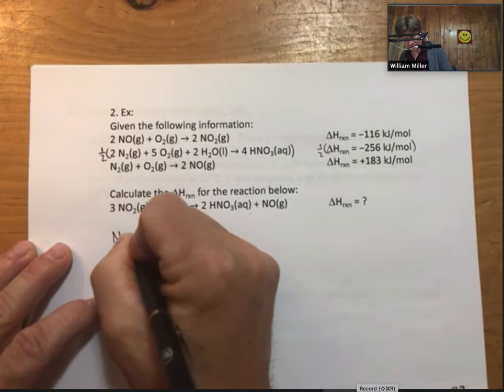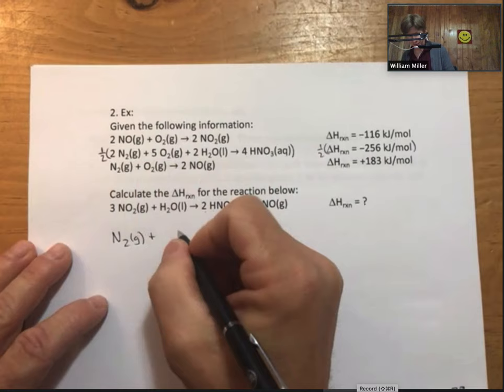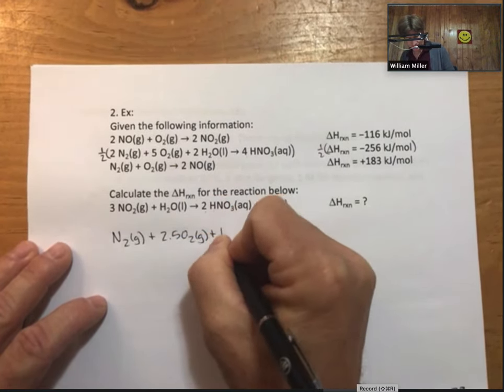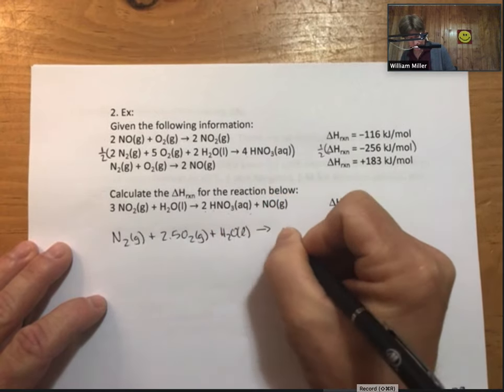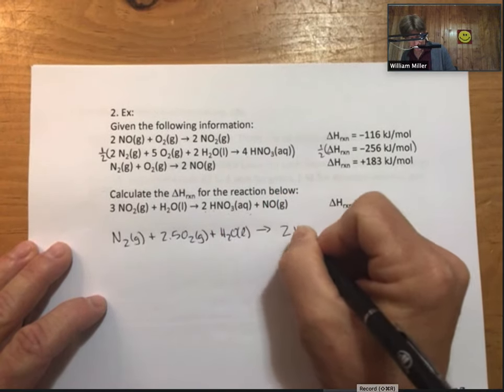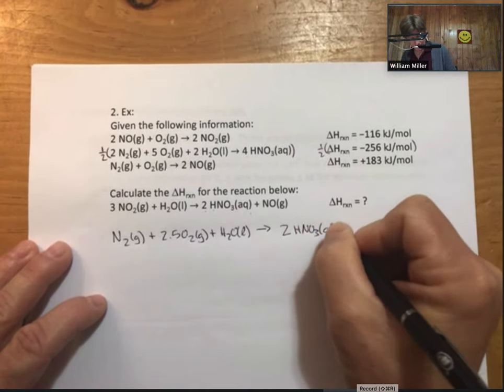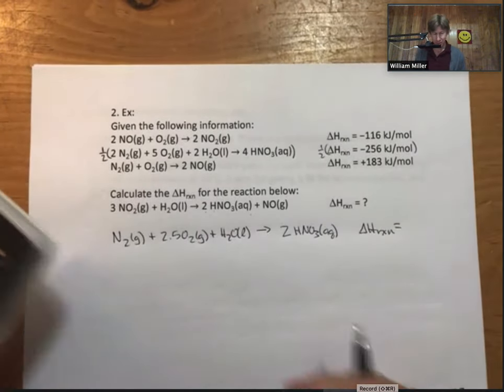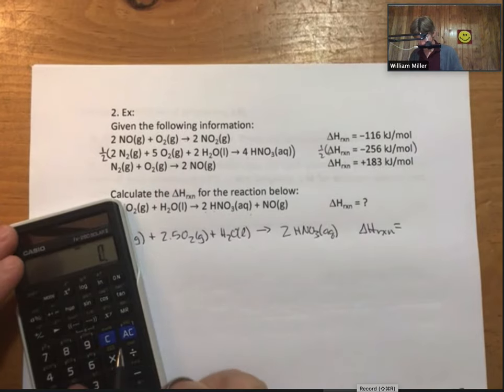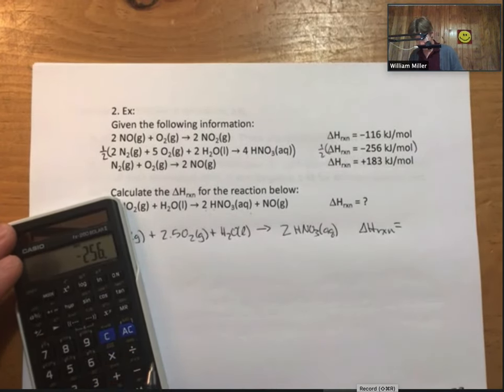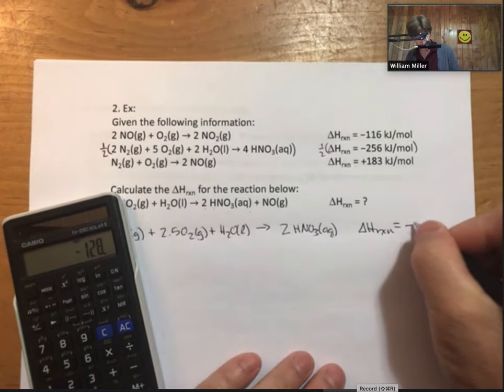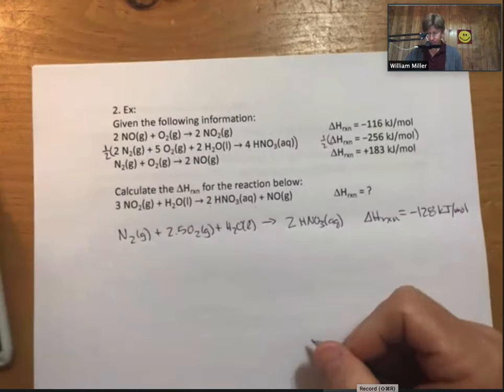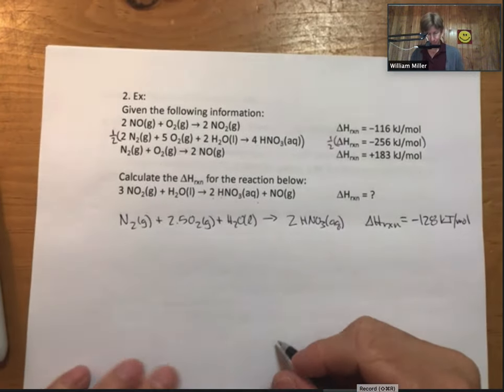Let me start by writing that. Half times two is going to be one and two. Half times five is going to be 2.5. Delta H reaction for this, 256 times 0.5 is minus 128. One down, two to go.